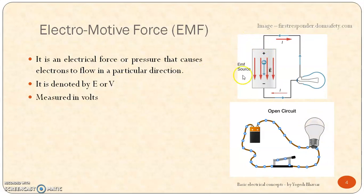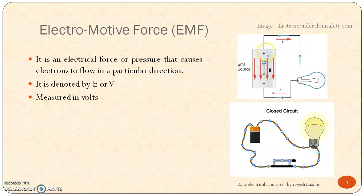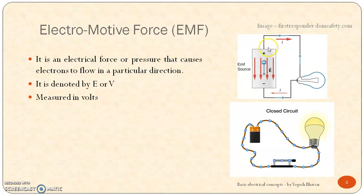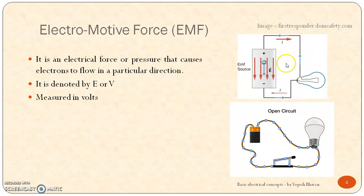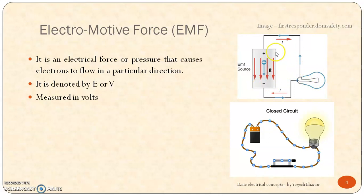So here in this diagram we can see there is a source of EMF — it may be either a battery or fuel cells. There is a positive terminal and a negative terminal. We know that the electrons flow from the negative to the positive terminal, and the current we denote from positive to negative. So this EMF will cause the electrons to flow, which means it causes current to flow in the circuit, and the bulb connected here will glow.